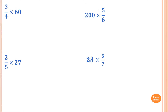Please stop the video and do this one yourself. 3 over 4 times 60. So 60 is just like 60 over 1. Now 60 and 4 — I can both divide by 4. So 4 divided by 4 is 1, and 60 divided by 4: 4 goes into 60 giving 15. I cannot simplify any further. So 3 times 15 is 45, and 45 over 1 times 1 is 1. So the answer is 45.